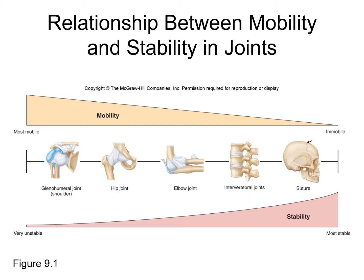We have a lot of joints in our body. Some are highly mobile with a high range of motion. Some joints are partially mobile so you can move but not too much. Some joints are immobile where no movement takes place, such as our sutures — the joints holding your cranial bones together, which never move.